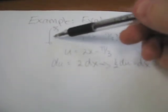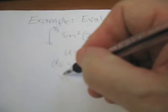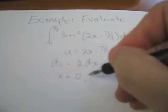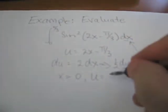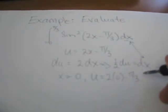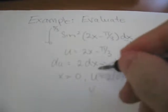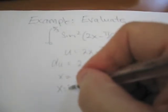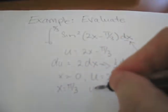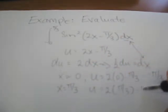Further, we need to change the limits of integration. So when x is equal to 0, what does u become? u becomes 2 by 0 minus π/3, which is negative π/3. Secondly, when x is equal to π/3, u becomes 2 by π/3 minus π/3, which will be π/3.